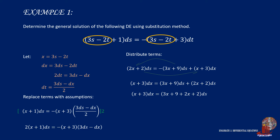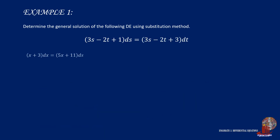Group ds from the two terms and simplify them to have x plus 3 times dx is equal to the quantity of 5x plus 11 times ds. The resulting equation shows that we arrive at a separable differential equation. The next thing to do is to group similar variables, so we get the quantity of x plus 3 multiplied by dx all upon 5x plus 11 is equal to ds.